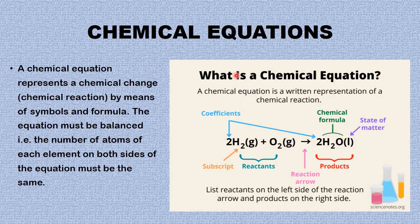Now moving along, we will be looking at chemical equations. What is a chemical equation? A chemical equation represents a chemical change — that is, a chemical reaction — by means of symbols and formula. The equation must be balanced; that is, the number of atoms of each element on both sides of the equation must be the same. A chemical equation is a written representation of the chemical reaction.